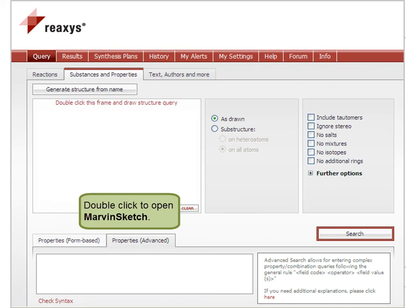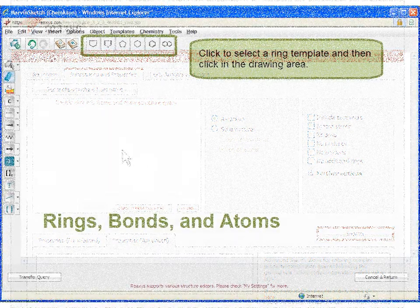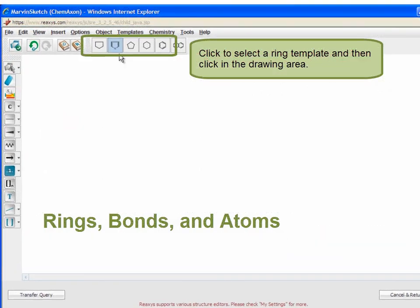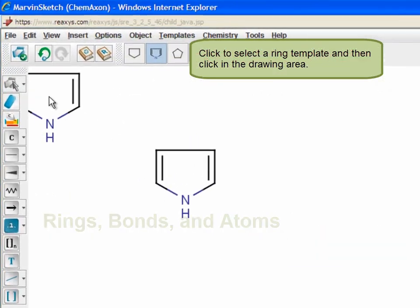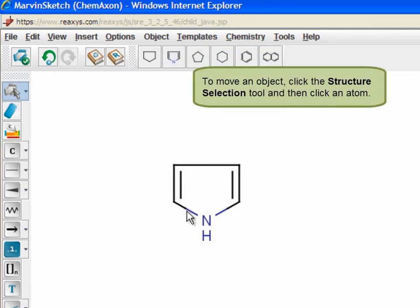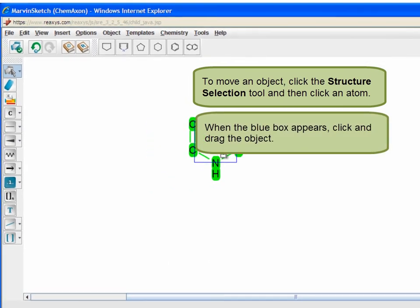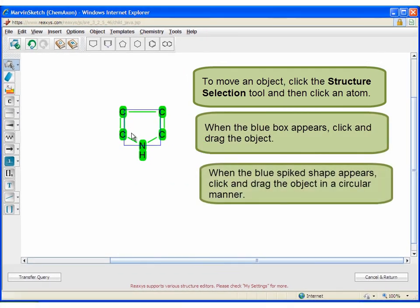Double-click to open MarvinSketch. Click to select a ring template and then click in the drawing area. To move an object, click the Structure Selection tool and then click an atom. When the blue box appears, click and drag the object.